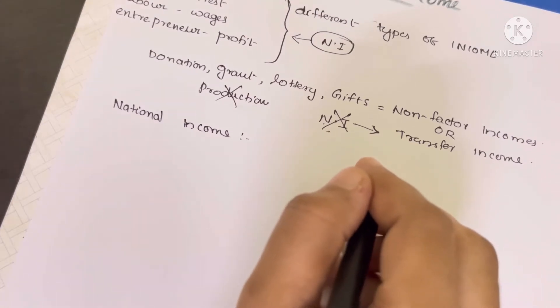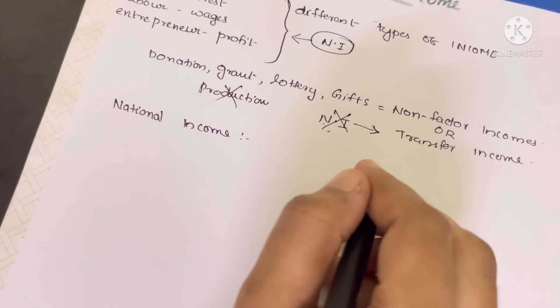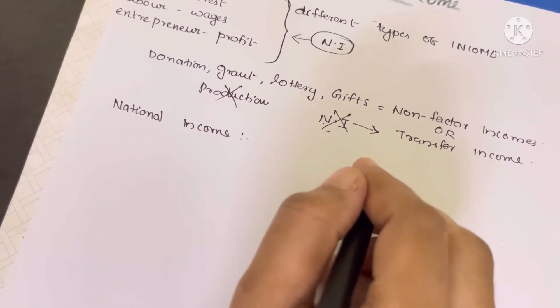What is the resident earned income? National income is the result of that. That is the result of income generated within the economic territory.